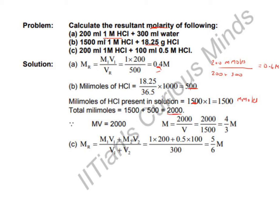The volume remains the same at 1500 ml because we added solid HCl, not a solution. In the first case the number of millimoles stayed the same and volume increased. In the second case millimoles increased and volume stayed the same, so concentration increases. The molarity is 2000/1500 = 4/3 = 1.33 molar.